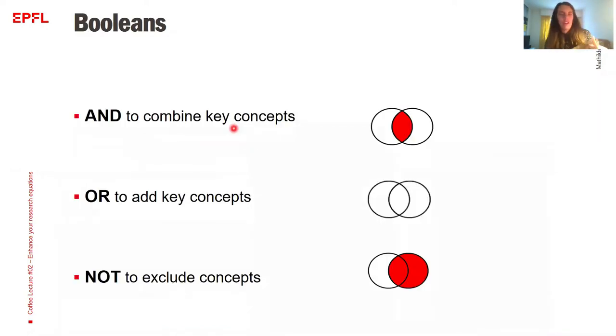So then those keywords to build an equation. This is the first step of building an equation. You will mix them with Boolean operators. In the context of information retrieval, using Booleans will help you to tell the system or the database or the search engine that you want to have concepts together or not. So the three main Booleans, they are AND, OR and NOT.